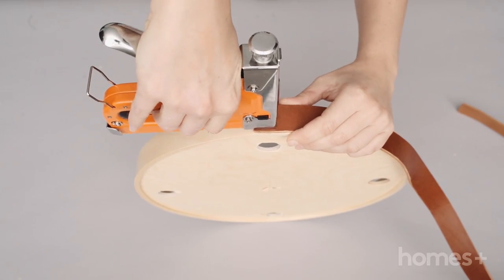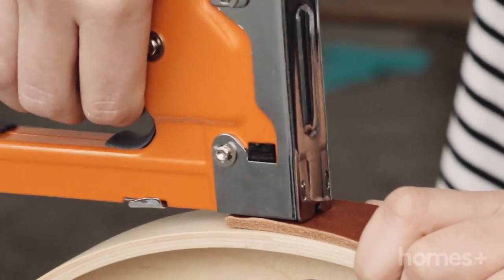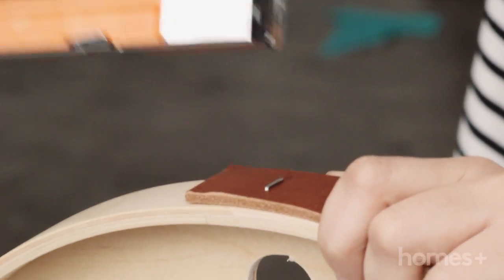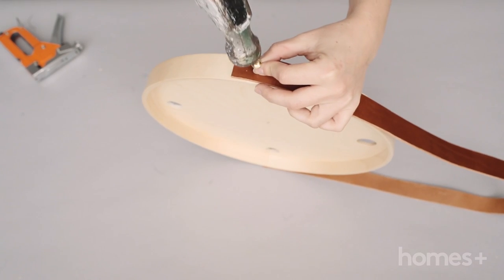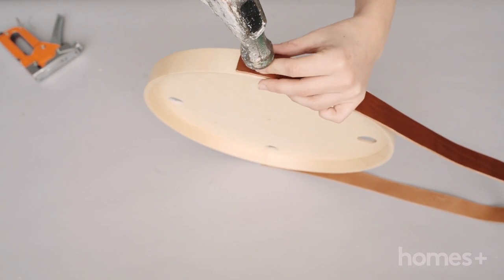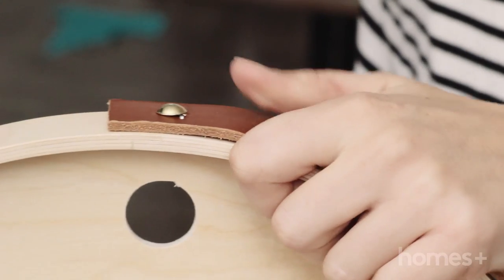Staple the leather strap to the sides of your tray at around the three o'clock and the nine o'clock points. Now take a gold upholstery pin and hammer it in over the staples to cover them up.